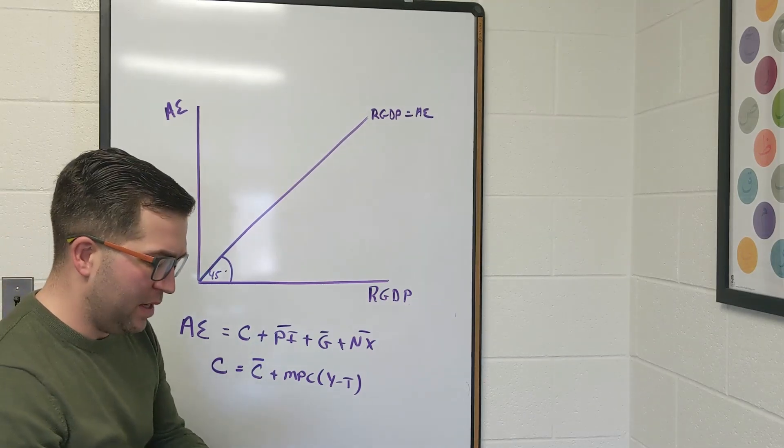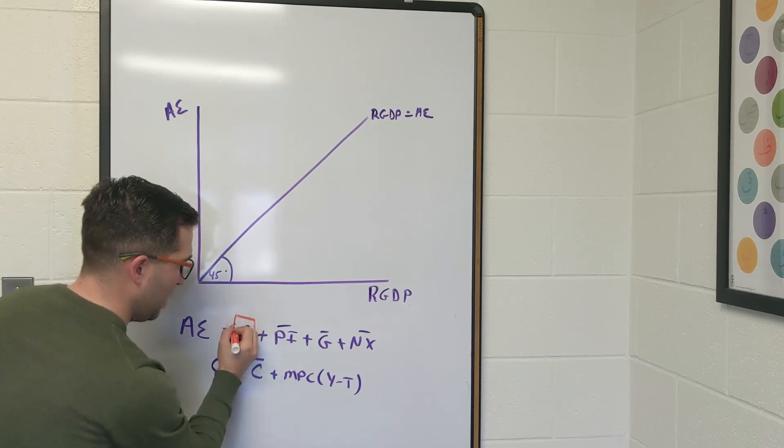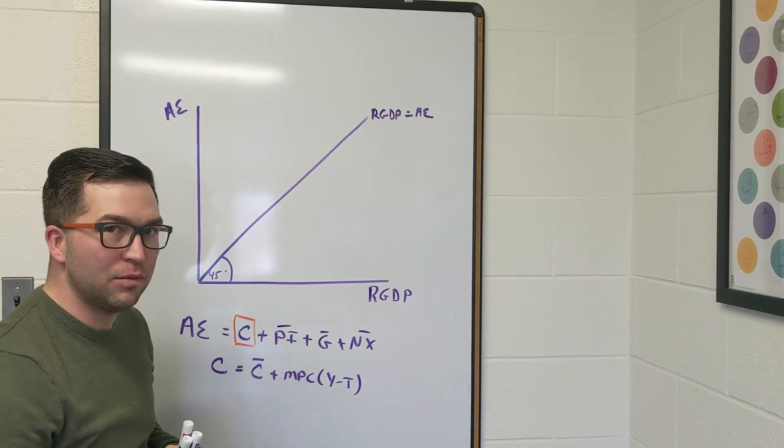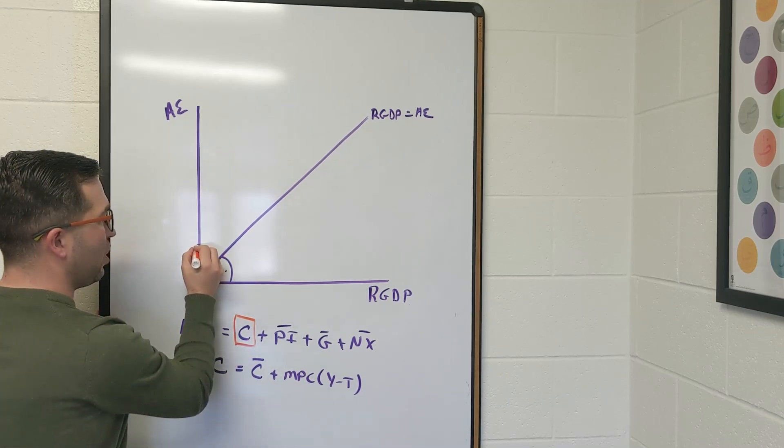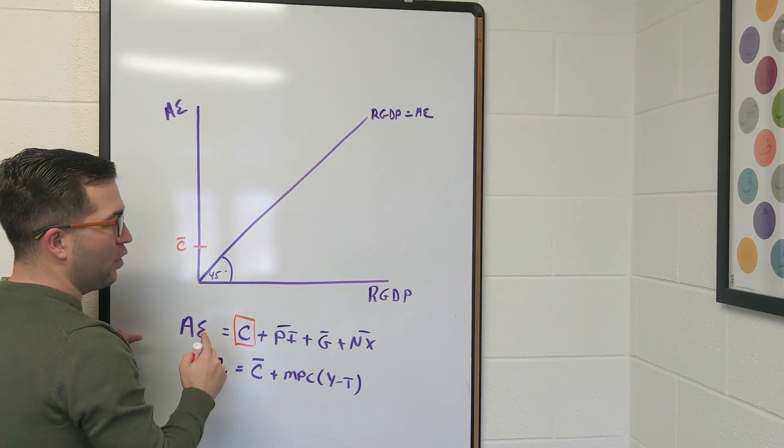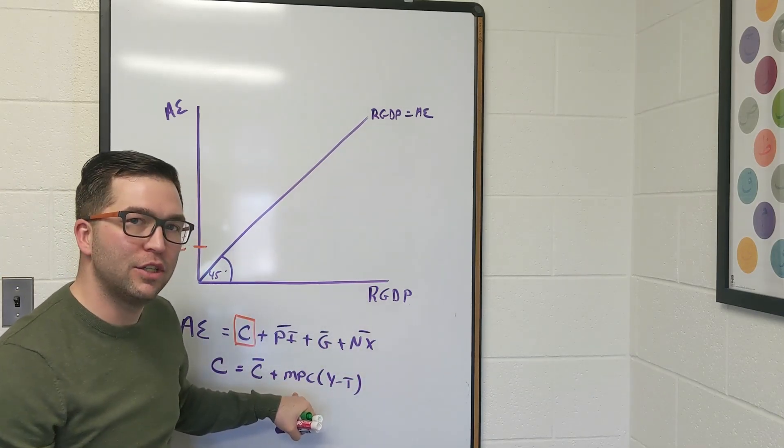So let's start with each one of these. Let's start with consumption. What do I know consumption looks like? I know the consumption function is going to start at C bar and it's going to be upward sloping with the slope of marginal propensity to consume.